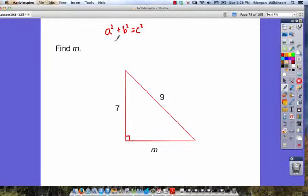And in this case, instead of drawing out our picture, we're going to use our formula to solve. It looks like the m is the short side, so that should be our a squared. We'll call it m squared.